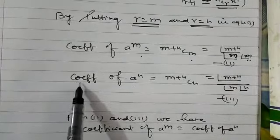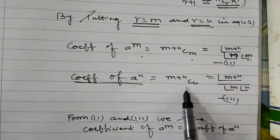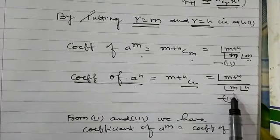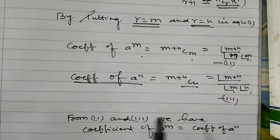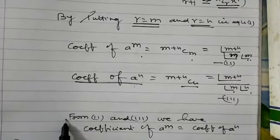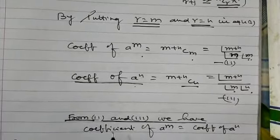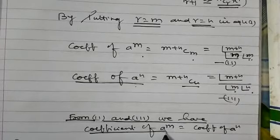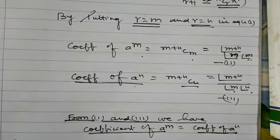Coefficient of a to the power m is equal to (m+n)Cm, which equals factorial(m+n) divided by factorial(m) and factorial(n). So from the second and third expressions, we have coefficient of a to the power m is equal to coefficient of a to the power n.